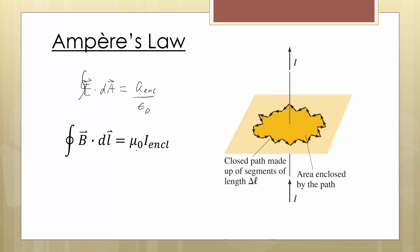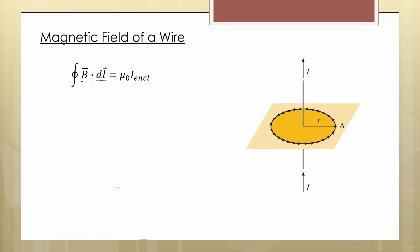Here is Ampere's law in all of its glory. If you remember Gauss's law, that was the integral of E·dA = Q enclosed over ε₀ — a surface integral with Gaussian surfaces. Now we have B·dL, with a circle on our integral telling us this is a line integral. We're going to integrate around the edge of a closed loop. That closed loop can take any shape as long as the ends meet up. The other half of Ampere's law is the enclosed current — the current passing through our Amperian loop — along with the permeability of free space μ₀.